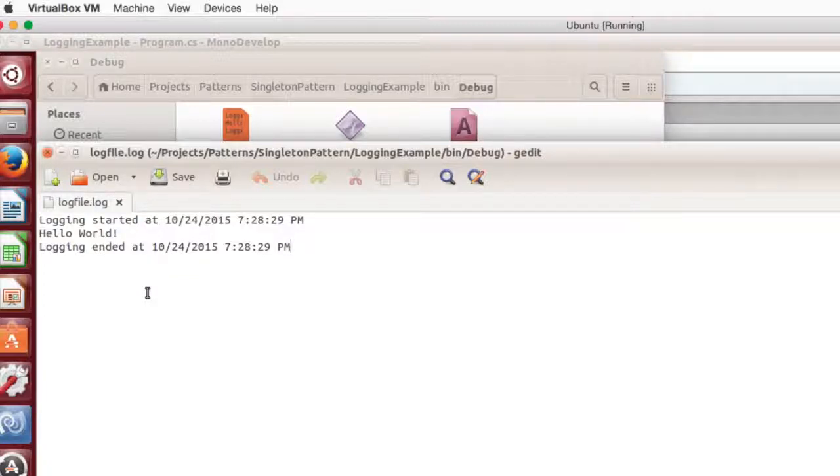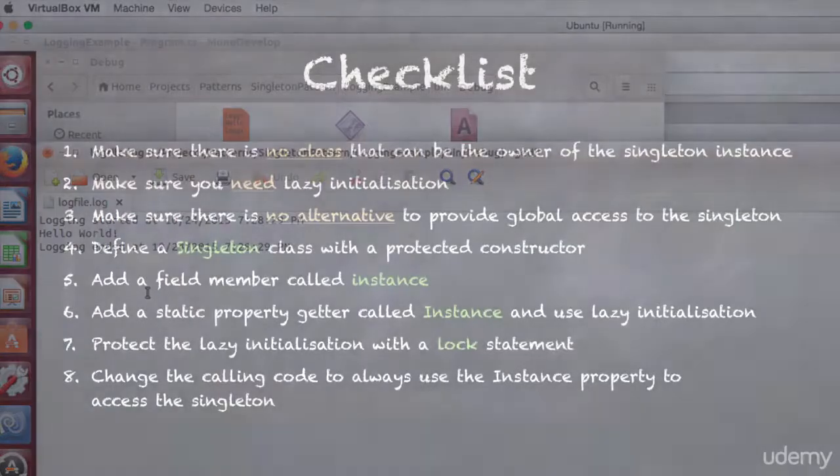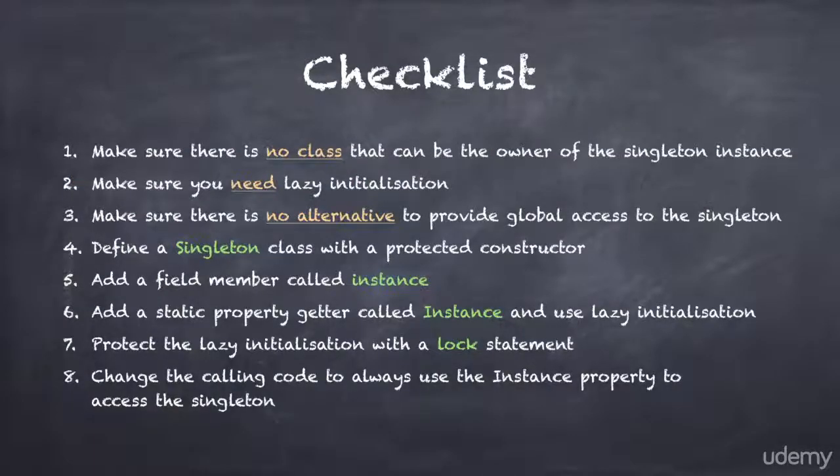Here is a quick checklist you can use to implement the singleton pattern. First, make sure there is not a single class in your code base that can be the owner of the singleton instance. Second, make sure you need lazy initialization. And third, make sure there is no alternative way to provide global access to the singleton.